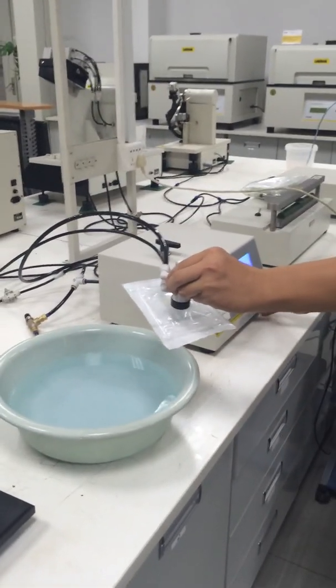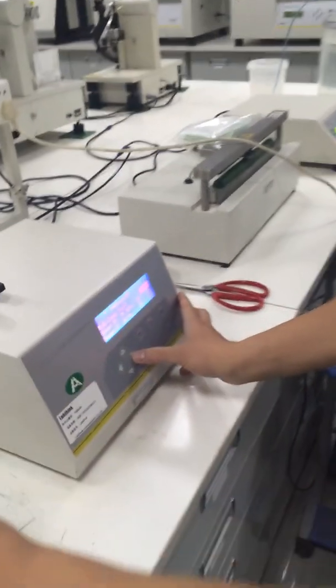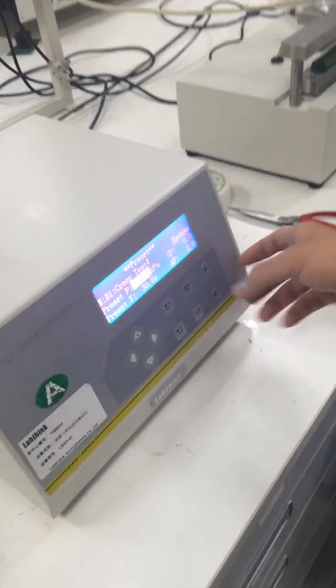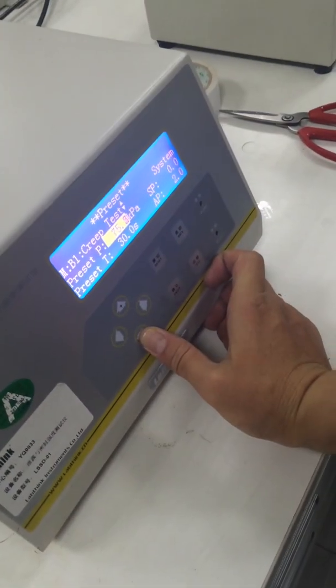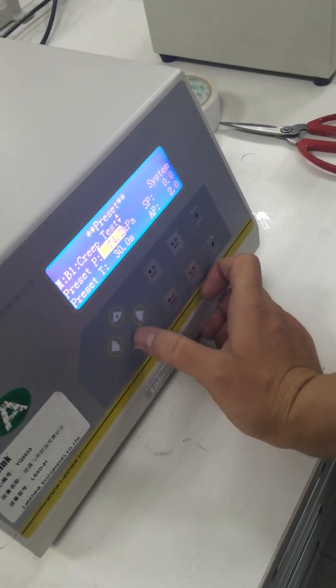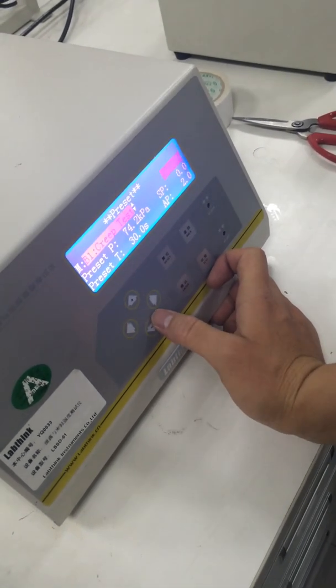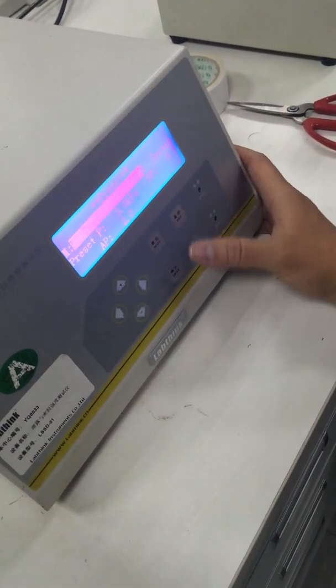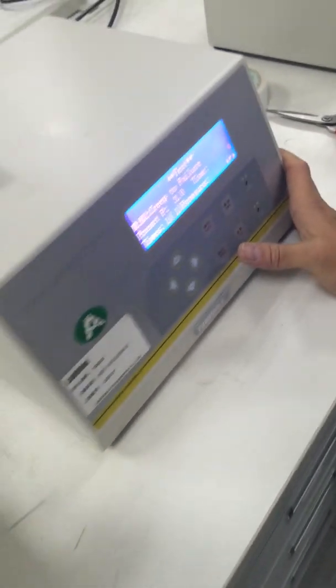I go to preset, and because I don't have the test mode you have, I'm using creep test or creep to failure test to simulate it. I choose this test mode and open the test.